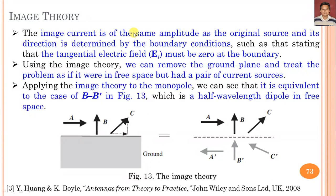The image current has the same amplitude as the original source, and its direction is determined by boundary conditions: the tangential electric field E_t must be zero at the boundary, so only the vertical field component exists. Using image theory, we can remove the ground plane and treat the problem as if it were in free space with a pair of current sources. Applying image theory to the monopole, it is equivalent to the case of current B and B'—a half-wavelength dipole in free space.